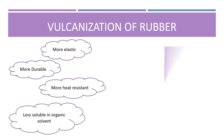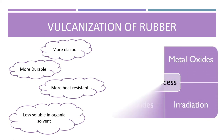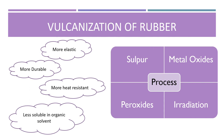Besides sulfur, the vulcanization process can also be carried out using metal oxides, peroxides and irradiation.